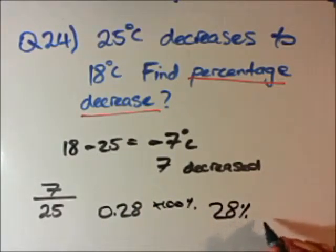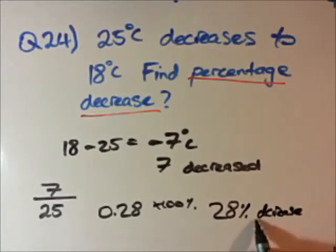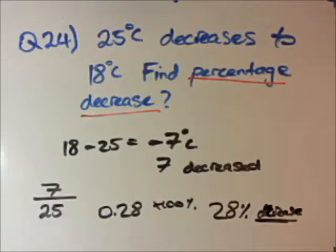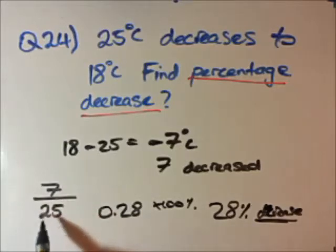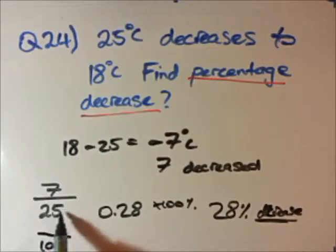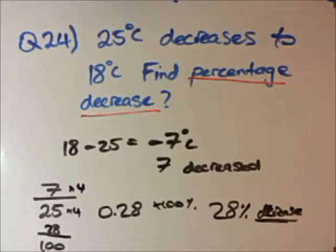This is a 28 percent decrease — it's important to always state at the end whether it's an increase or decrease. If you don't have a calculator, you can convert the fraction by multiplying both numerator and denominator to get a denominator of 100: times by 4 gives 28 on top, which directly gives 28 percent.